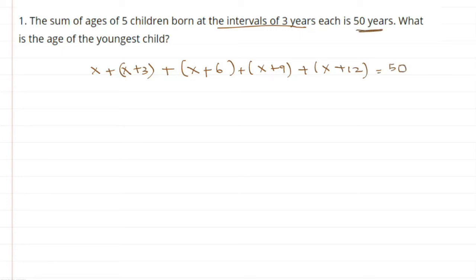Add all the x's: 1x, 2x, 3x, 4x, 5x. So 5x plus 3 plus 6 plus 9 plus 18 plus 12 is 30, equals 50.